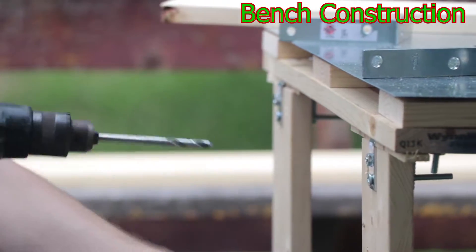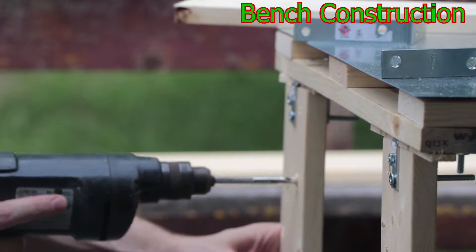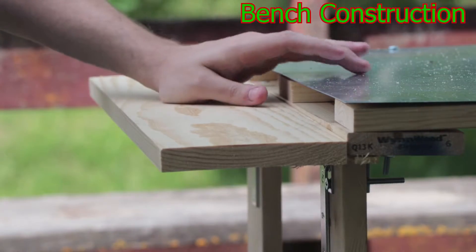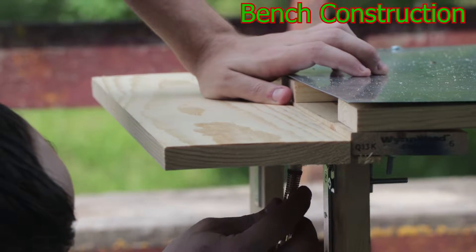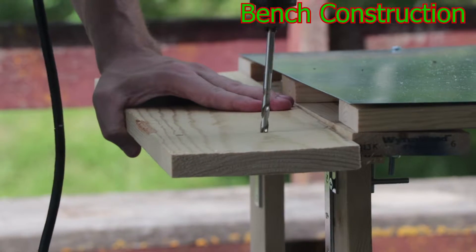So for the base of the bench I just bolted up the one by fours in a square and then added another one by four across the middle to support the weight, and then I bolted down those metal sheets to make a fireproof surface.